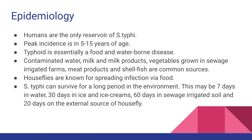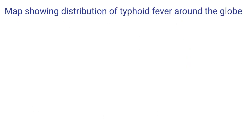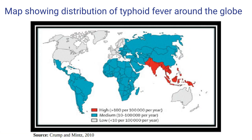Common sources include contaminated water, milk and milk products, vegetables grown in sewage-irrigated farms, meat products, and shellfish grown in sewage-contaminated water. Houseflies are known for spreading infection via food. S. typhi can survive for around seven days in water, up to 30 days in ice and ice creams, 60 days in sewage-irrigated soil, and 20 days on the external surface of the housefly.